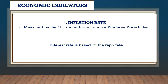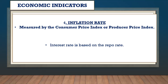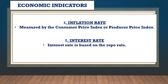The fourth economic indicator is the inflation rate. The inflation rate is measured by the consumer price index and the producer price index. That is covered in detail in the inflation chapter in paper two. Interest rate is also an indicator, and it is based on the repo rate — also covered in paper two.